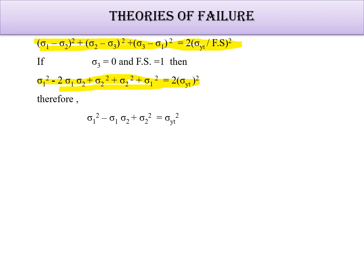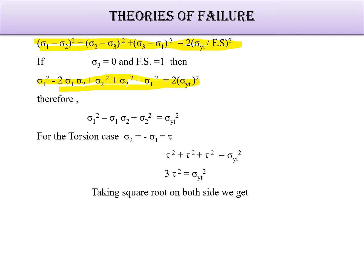For the torsion case, σ2 = −σ1 = τ (shear stress). Substituting, we get: τ² + τ² + τ² = σ_yt², which gives 3τ² = σ_yt². Taking the square root: √3·τ = σ_yt, or τ = (1/√3)·σ_yt = 0.577·σ_yt. So the shear stress in a component should be 0.577·σ_yt as per distortion energy theory. This result — τ = 0.577·σ_yt — is very frequently asked in examinations, and this is how you prove it.